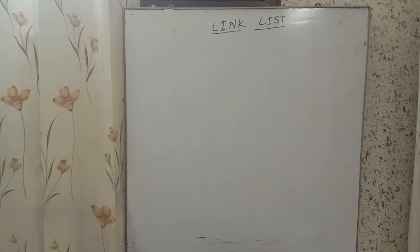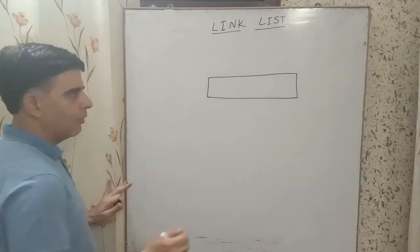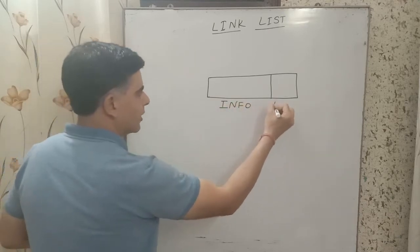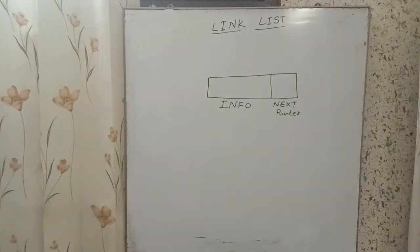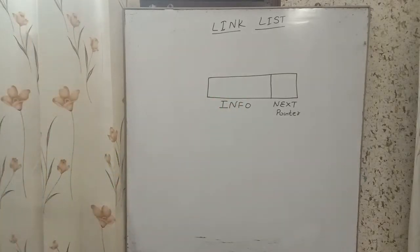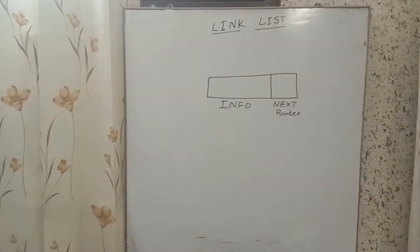Each element of a linked list, which we call a node, has at least two parts — it can have more than two. The first part is known as the info part and the second part is known as the next part or the pointer part. The info part stores data related to that element — it can contain integer, float, string, or any other complex data. The next part contains the address of the next node in the linked list.